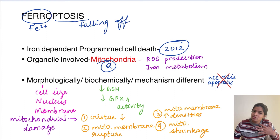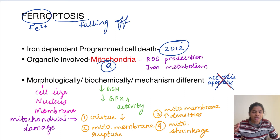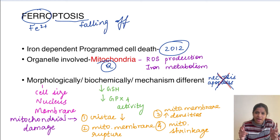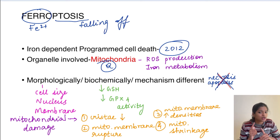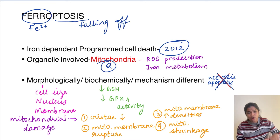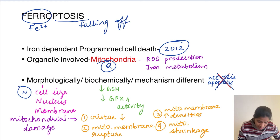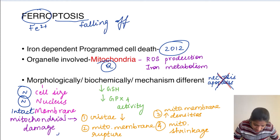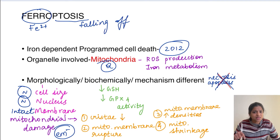Ferroptosis is distinct from other forms of cell death like necroptosis or apoptosis, differing morphologically, biochemically, and mechanically. In necrosis, the cell swells and the nucleus undergoes pyknosis, with membrane damage. In apoptosis, there is cellular shrinkage, nuclear/chromatin condensation, but the membrane remains intact. In ferroptosis, the cell size is normal, the nucleus is normal, the membrane is intact — only the mitochondria shows damage, visible only by electron microscopy.